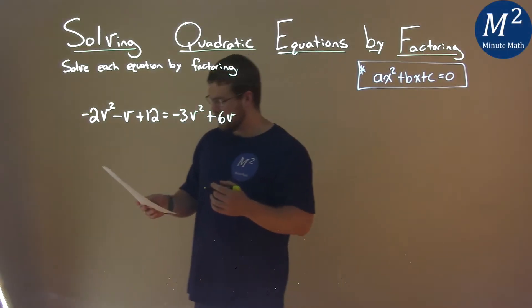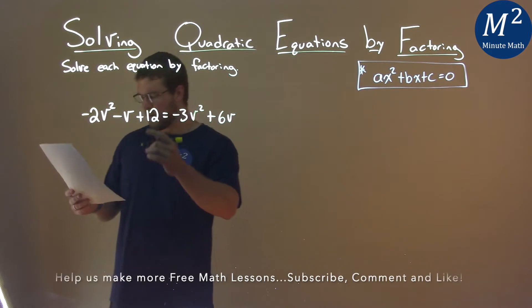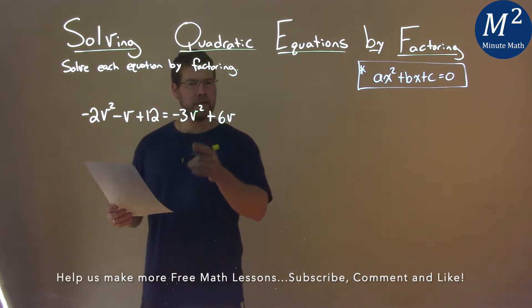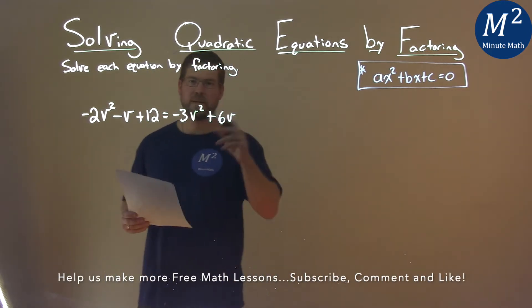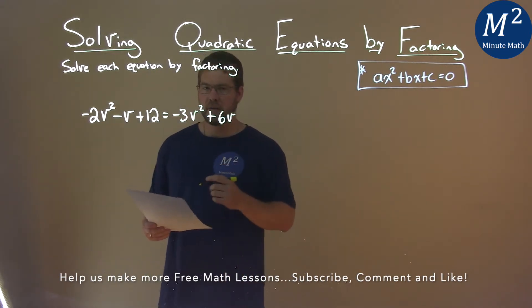We're given this problem right here: -2v² - v + 12 = -3v² + 6v, and we need to solve this by factoring.